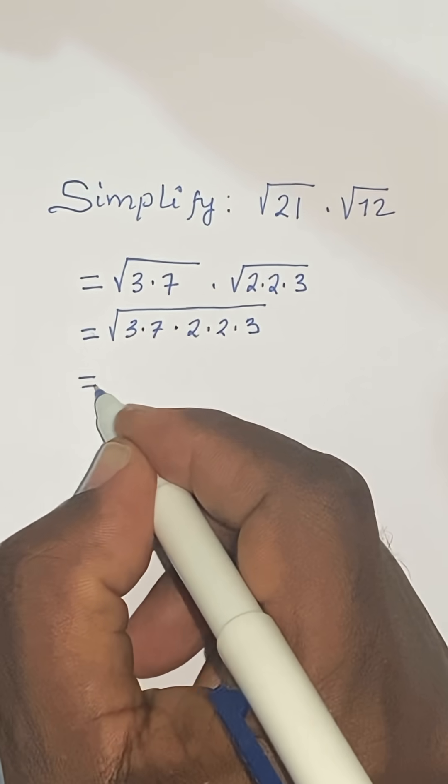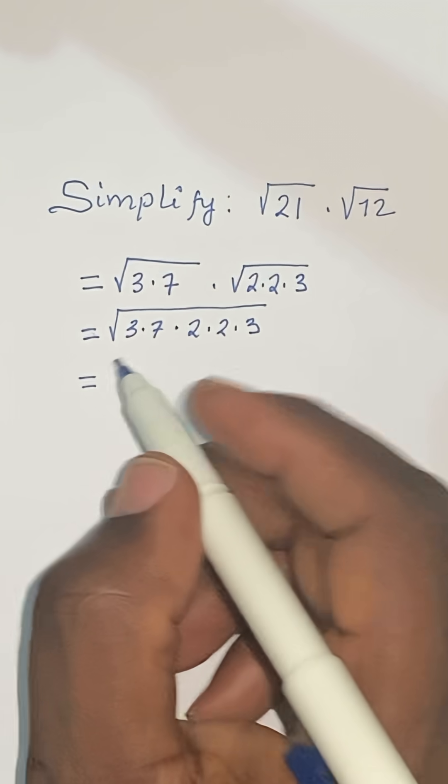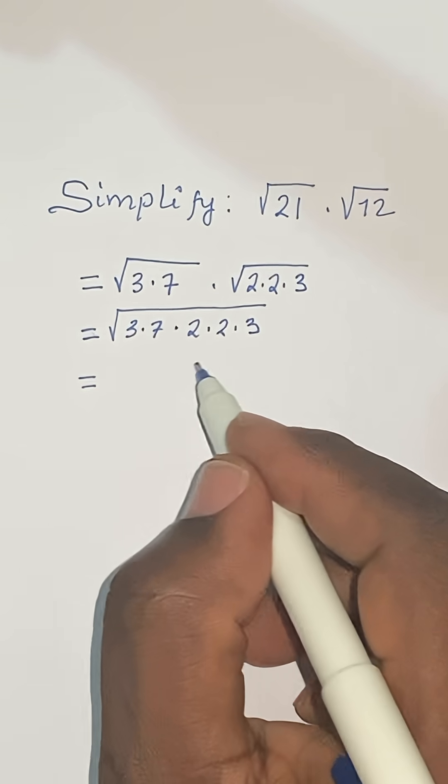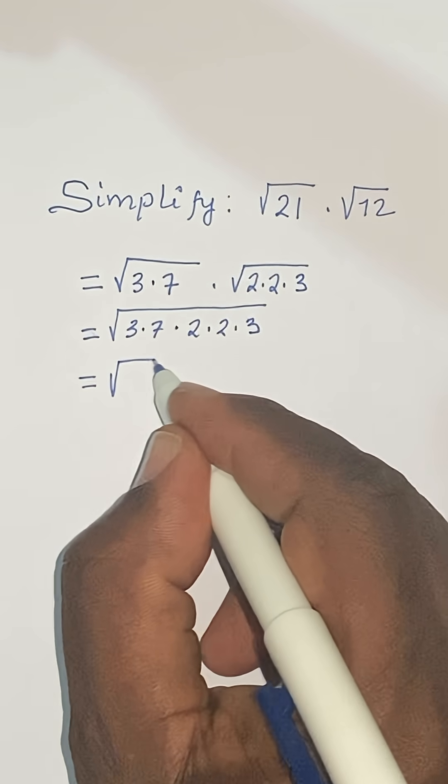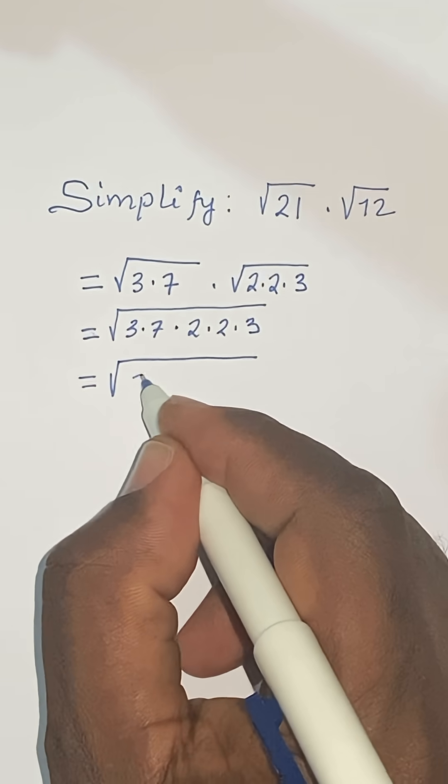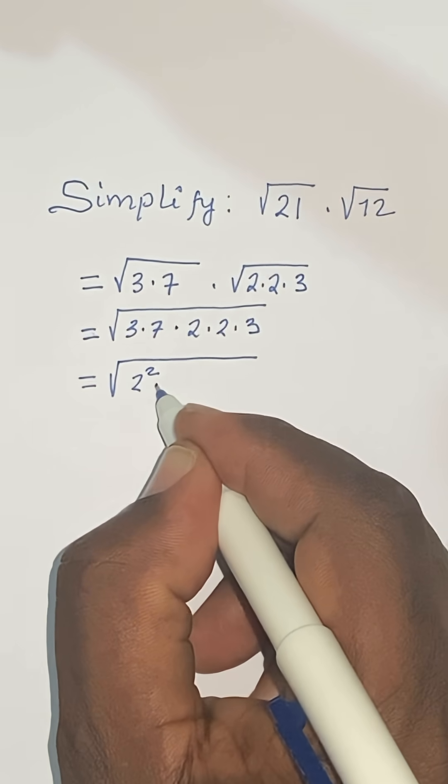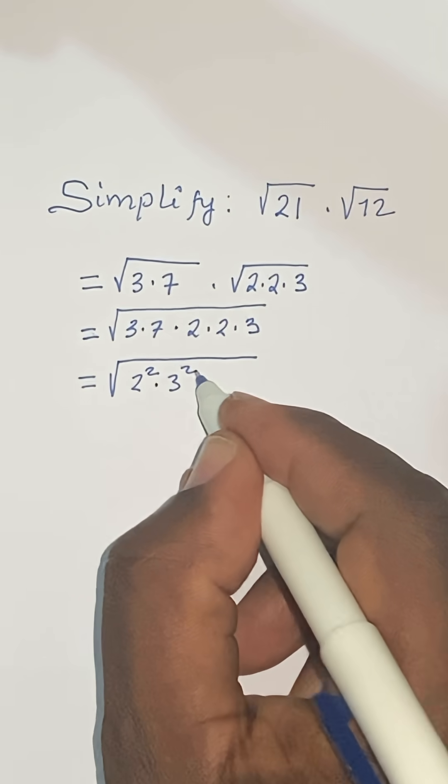The next thing we do is that we group powers. So we have 3 and 3 here and then 2 and 2. So we write this as the square root of 2 squared times 3 squared.